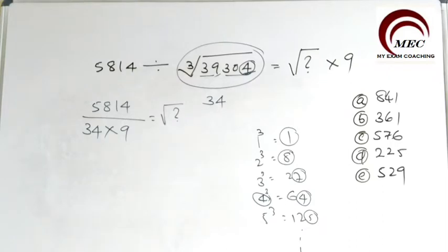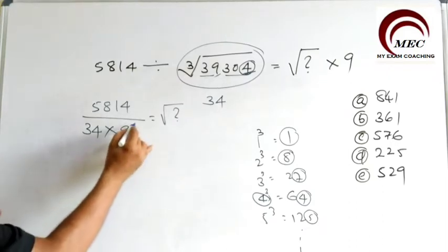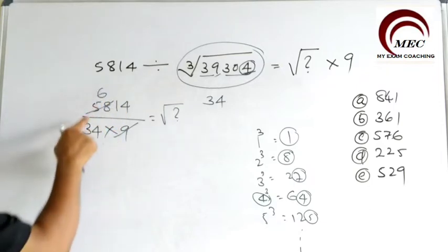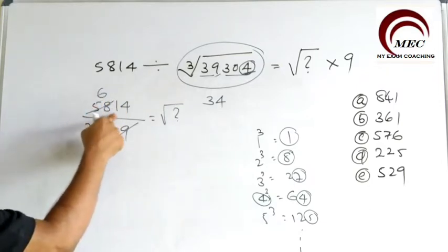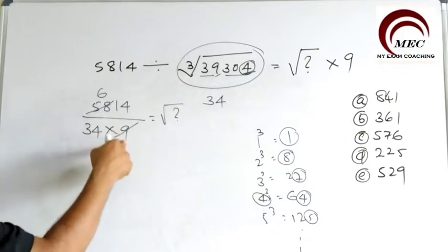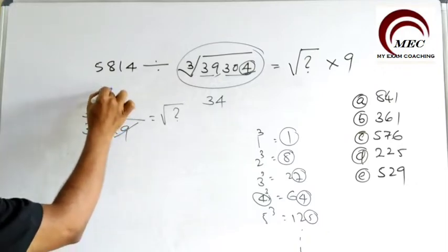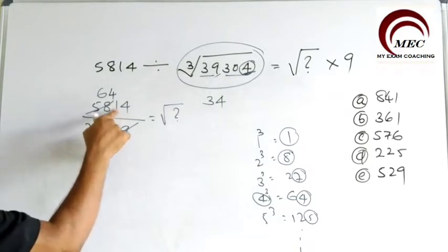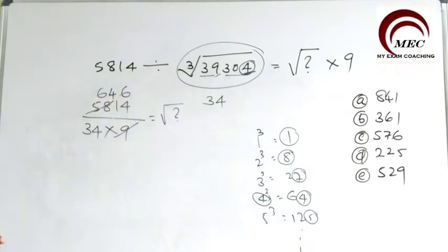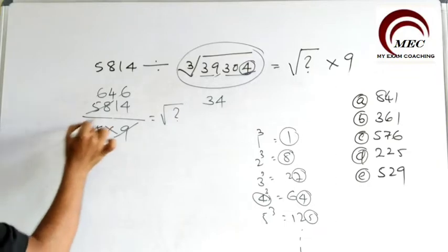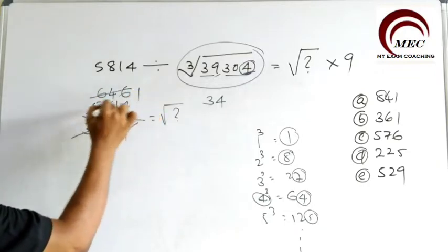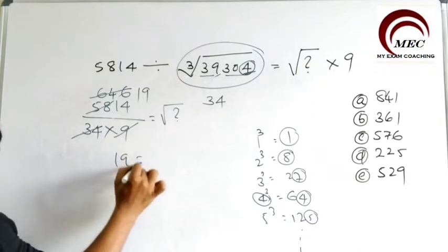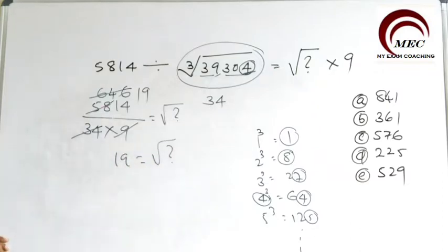Now you can cut it directly. 9 goes into 5814: 6 nines are 54, balance 4, giving 41. 41 again — 4 times. 4 nines are 36, then 5, 54, 6 times. So you can cut 34 and 6 — that's 1, 9 times — giving 19. So 19 is equal to the square root of which number?